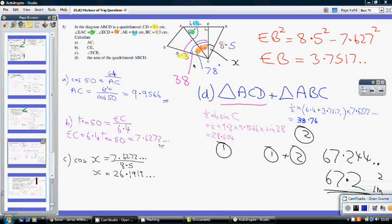Now, part D, there's quite a bit going on here. To work out the area of the whole quadrilateral. So, I've broken it down into two triangles. This triangle here, ACD, and then secondly, the triangle ABC. So, starting off with the triangle ACD.